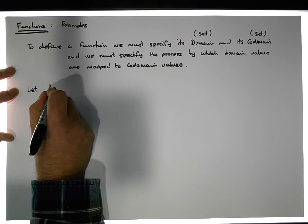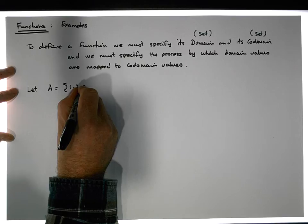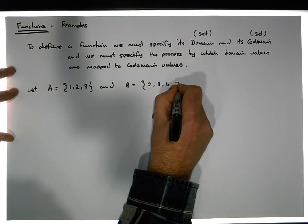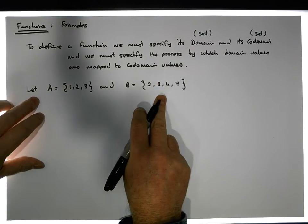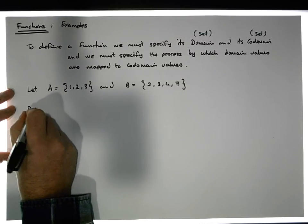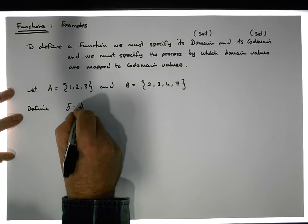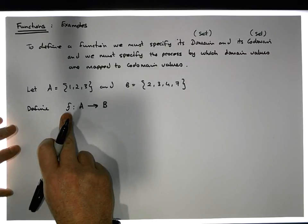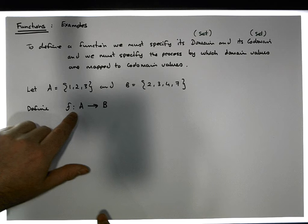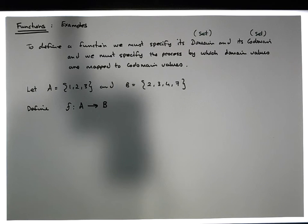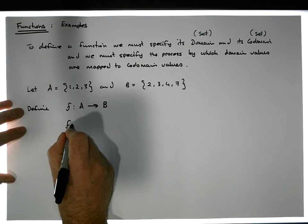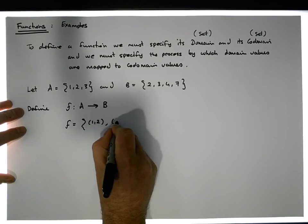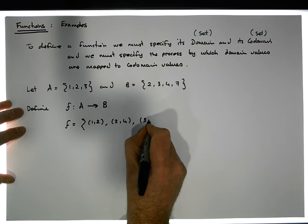So let's say let A equal the set {1, 2, 3} and B equal the set {2, 3, 4, 7}. I have an A and a B set, and I'm going to define f to be a relation from A into B. It's defined as the set of ordered pairs: one is taken to two, two is taken to four, and three is taken to seven. The question is whether this is a function or not.